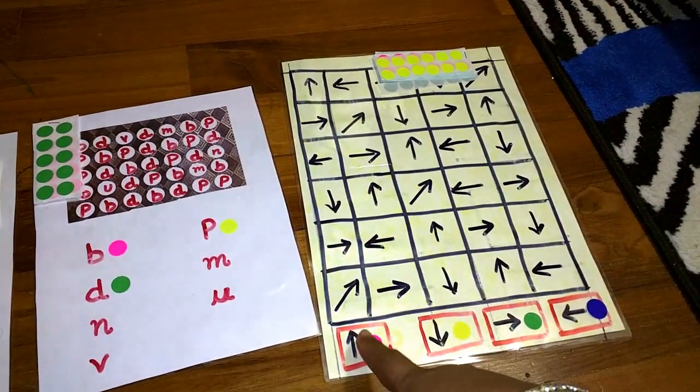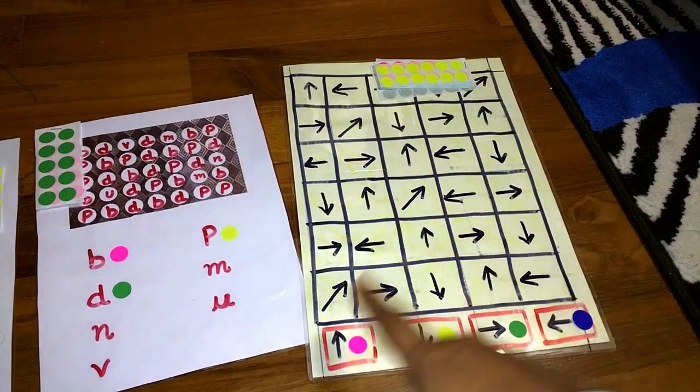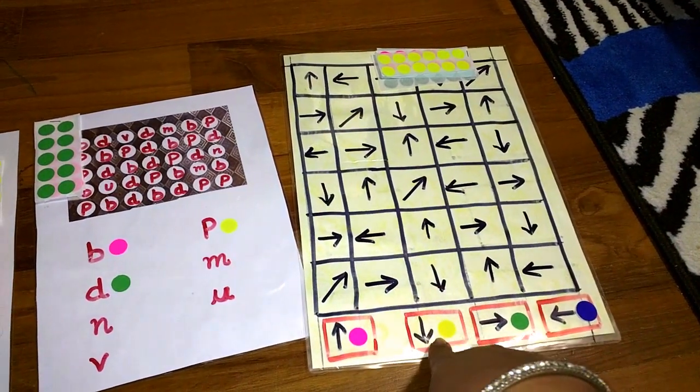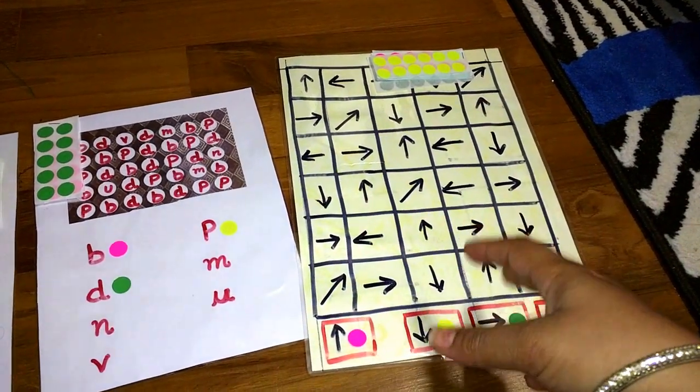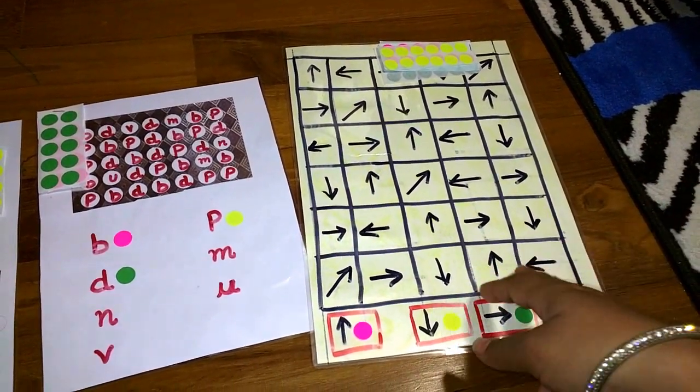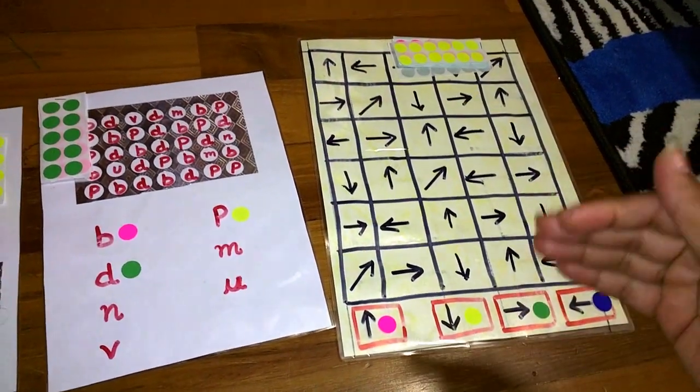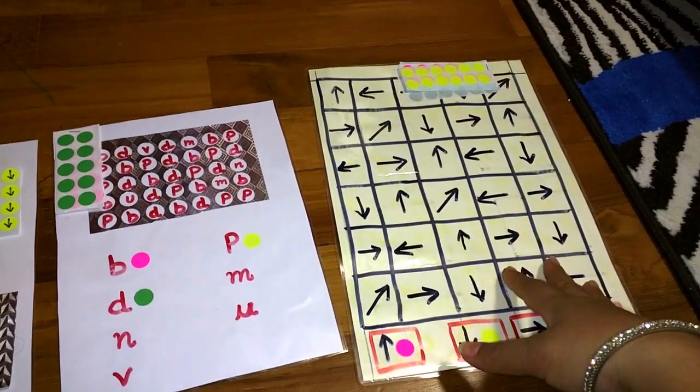You can also do one more thing—rather than creating four variables, you can use only two variables, like only upward and downward arrows. Don't confuse the child, so you can create many simpler versions of this one using these dot stickers, analyzing how much a child is capable of and then increasing the complexity level one by one.